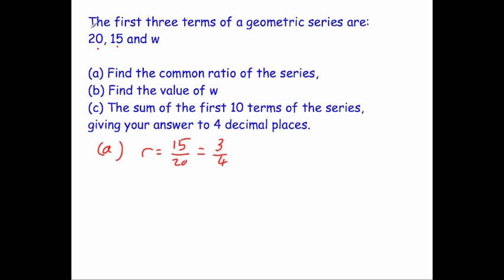Let's just check, if we set off with 20 and we times it by 3 quarters, we get 15. And if we times 15 by 3 quarters, we'll find W. And that leads us nicely onto part B.